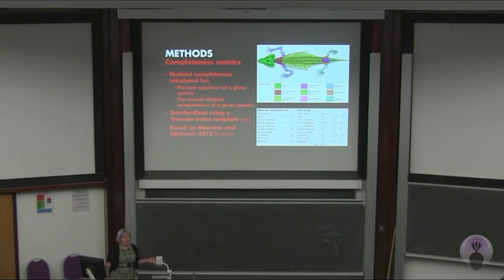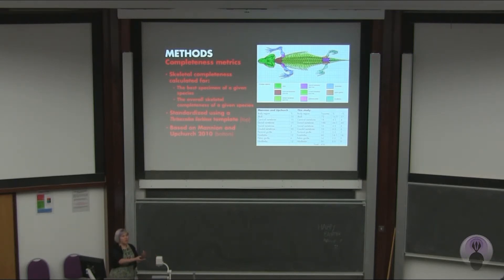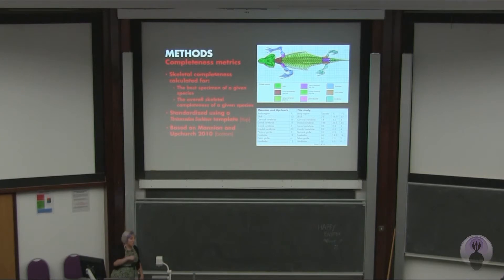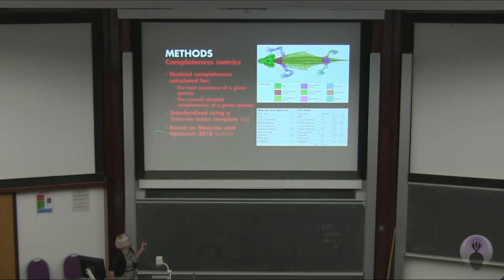The specimens were coded based on first the best specimen of a given species, and then the overall completeness as best I could do. So if there was a holotype, I would code that first, determine how complete it was, and then through the literature add whatever other body components the holotype might be missing to determine how complete our knowledge was for that species. That approach was based on Mannion and Upchurch's study on sauropod dinosaurs.